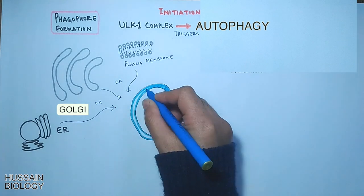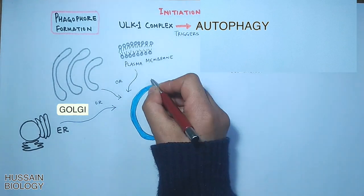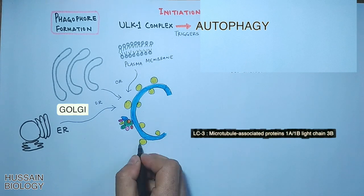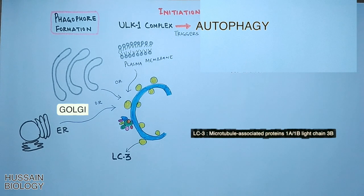The phagophore has LC3 molecules on it, as shown in the diagram. It also has the ATG12–ATG5–ATG16L complex on the membrane.